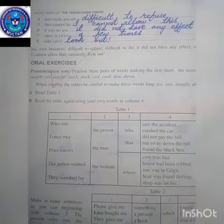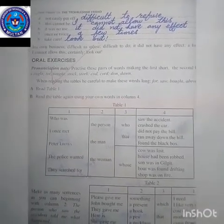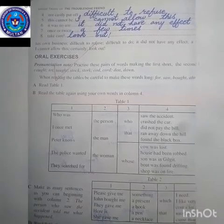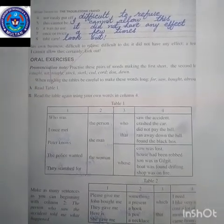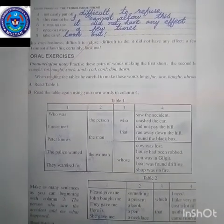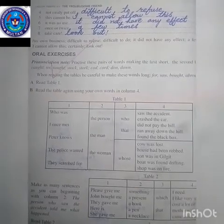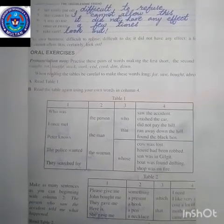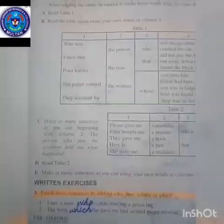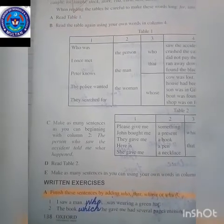Number five: 'it cannot be' means I cannot allow this. Number six: 'it was no use' means it did not have any effect. Number seven: 'once or twice' means a few times. Number eight: 'take care' means look out.